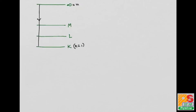The K alpha line means transition from n equals 2 to n equals 1. This is the K alpha line; this is the K absorption edge. Similarly, K beta is the transition from n equals 3 to n equals 1.